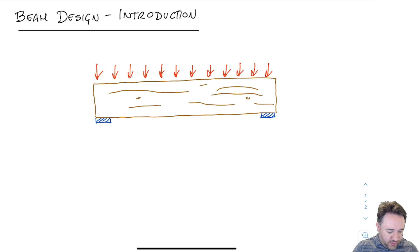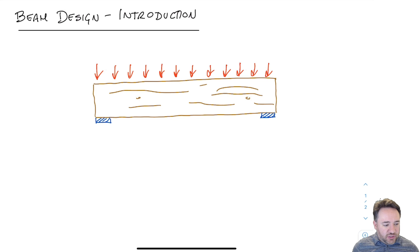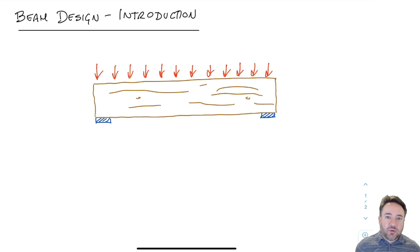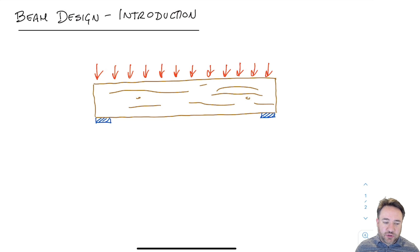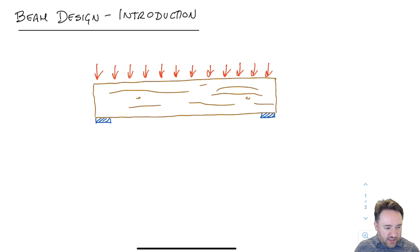There are four different parts of beam design, and in this video I'm just going to go over each of them one by one so that you know which ones we're going to focus on in the next videos. Then in the next video we're going to start to talk about bending strength.